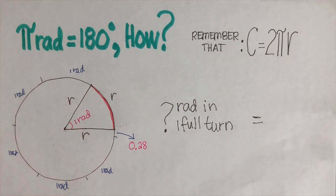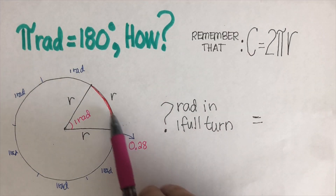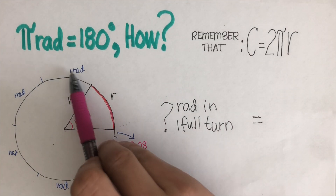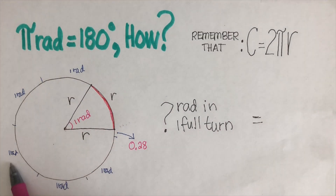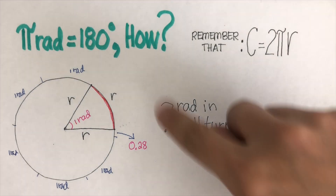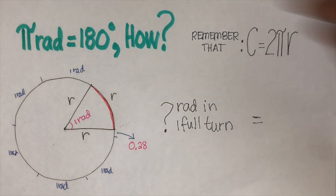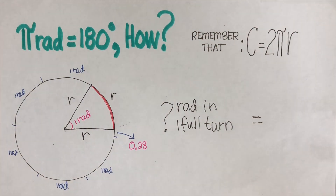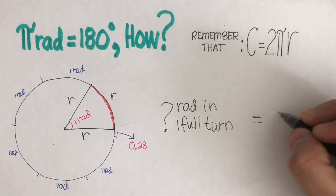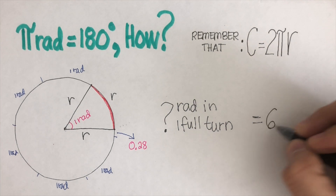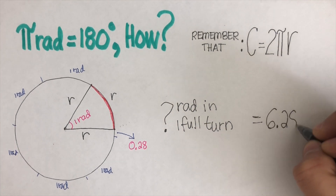So if I add them up — one, two, three, four, five, six — plus 0.28, one full turn is actually 6.28 radians.